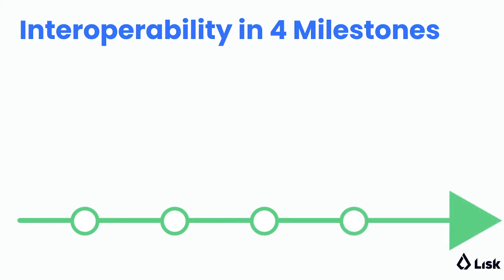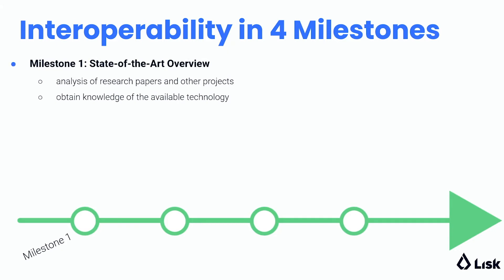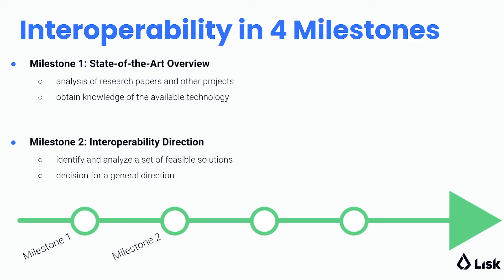We structure our research in four milestones. In the first milestone, the state-of-the-art overview, we performed a survey of the research papers and the available technologies in the ecosystem. We obtained a vast knowledge of what is possible today, and we moved then to the second milestone, interoperability direction. In this milestone, we identified and analyzed a set of feasible solutions and we reached a decision for a general direction for LISC interoperability.